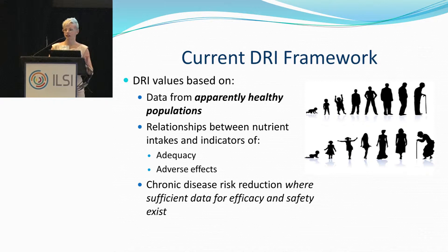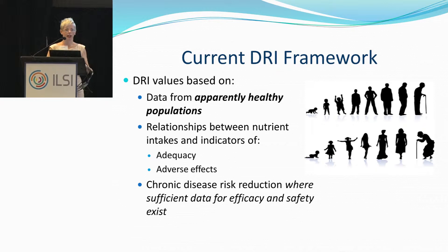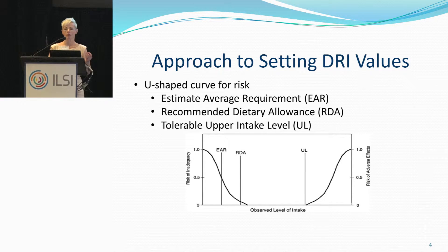As Linda laid out, we have a current DRI framework — I'll call this the classic DRI framework. The purpose of dietary reference intakes is to set values for intakes for apparently healthy populations, the general population, not clinical populations. It sets values relating nutrient intakes with indicators of adequacy, as well as with intakes associated with adverse effects from high intakes of particular nutrients. In the 1994 framework, it was explicit that where you have sufficient data to show efficacy and safety, you should consider chronic disease risk reduction when setting those values. That is a lofty goal, and from a public health perspective, very important.